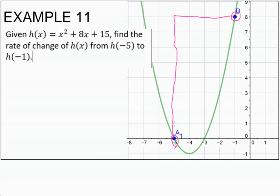So we went up 1, 2, 3, 4, 5, 6, 7, 8, and then over 1, 2, 3, 4. So that's 8 over 4, which is 2.